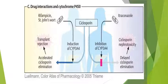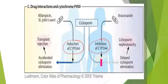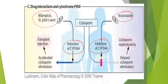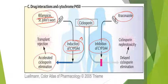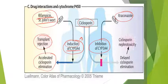This is a very important slide showing induction and inhibition of CYP3A4. Induction is caused by rifampicin and St. John's Wort — a herbal medicine — whereas inhibition is caused by itraconazole. When a patient takes rifampicin or St. John's Wort in the presence of cyclosporine, it causes induction of CYP3A4 enzyme, which causes accelerated cyclosporine elimination. When enzyme levels increase, elimination accelerates, ultimately leading to transplant rejection — as we already saw in the graph from the previous slide.